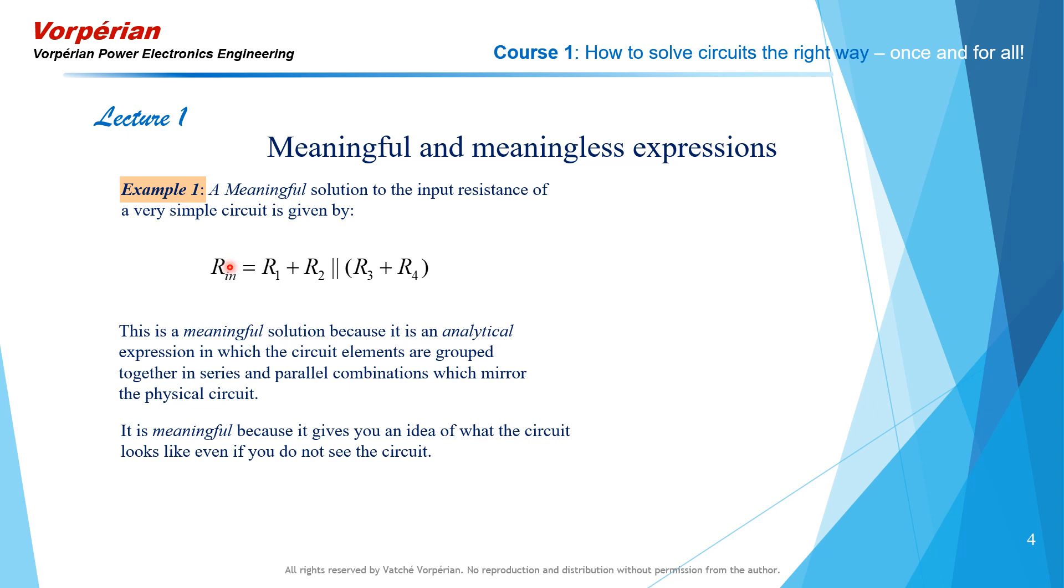You are going to be working with circuits more complicated than the one we just saw, and therefore they will have more complicated expressions for their input resistance, output resistance, voltage gain, current gain, or what have you. If in those expressions the circuit elements are not grouped together in such meaningful fashion, then you're going to have a very hard time trying to figure out how those elements are contributing to that transfer function. To illustrate this point, I'm going to show you an example of the gain of a non-ideal inverting op-amp a little later on.